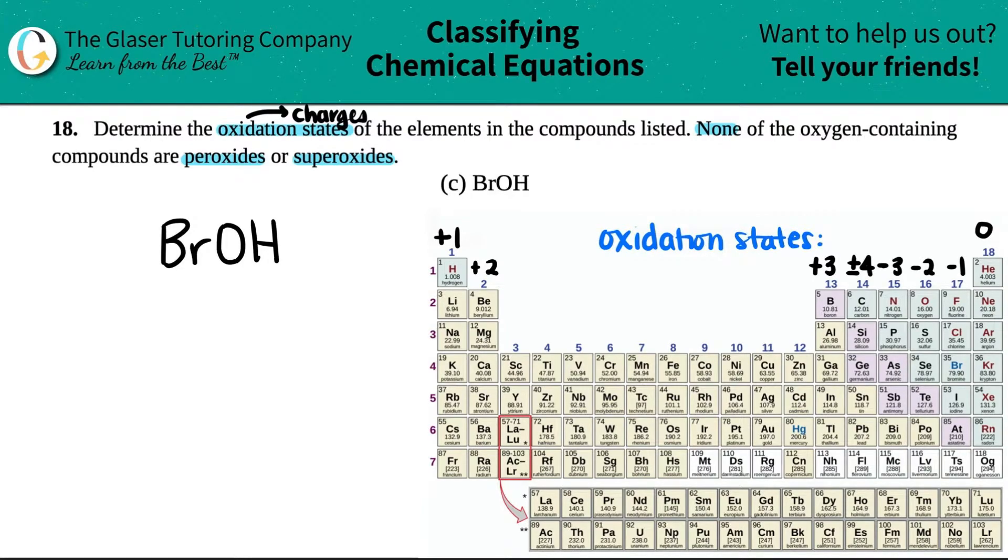The first thing here is that I noticed there's an OH here, and we've done tons of problems and we've memorized our polyatomics. OH is a polyatomic. OH is hydroxide. What is the charge of hydroxide? It's always a minus one, a negative one. This is hydroxide. So what I can do is I can treat this OH as a single unit.